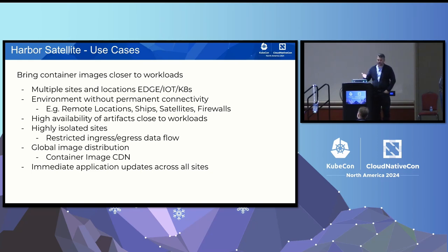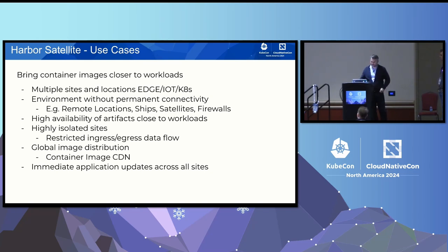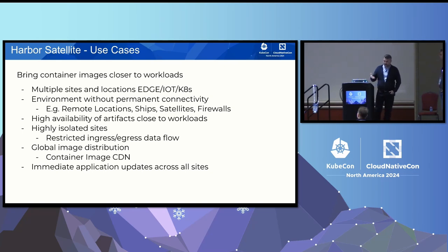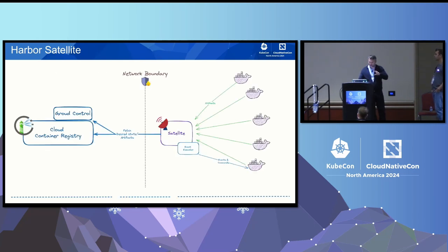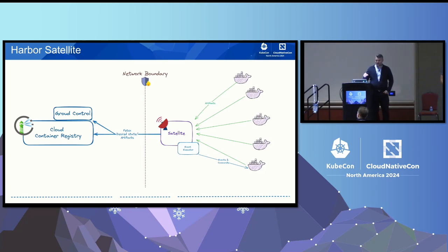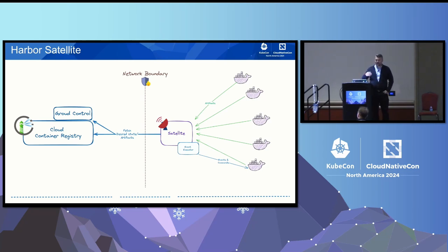There are also typical use cases like environments with low connectivity and resource constraints, since the device is typically small. You want a resource-constrained deployment — maybe a single binary — and you can also use the Satellite as a global CDN to distribute your images globally. The architecture consists of Harbor itself, where you manage what artifacts should be located on which site. Then there is Ground Control, which manages those devices or sites — it's kind of a device management solution.